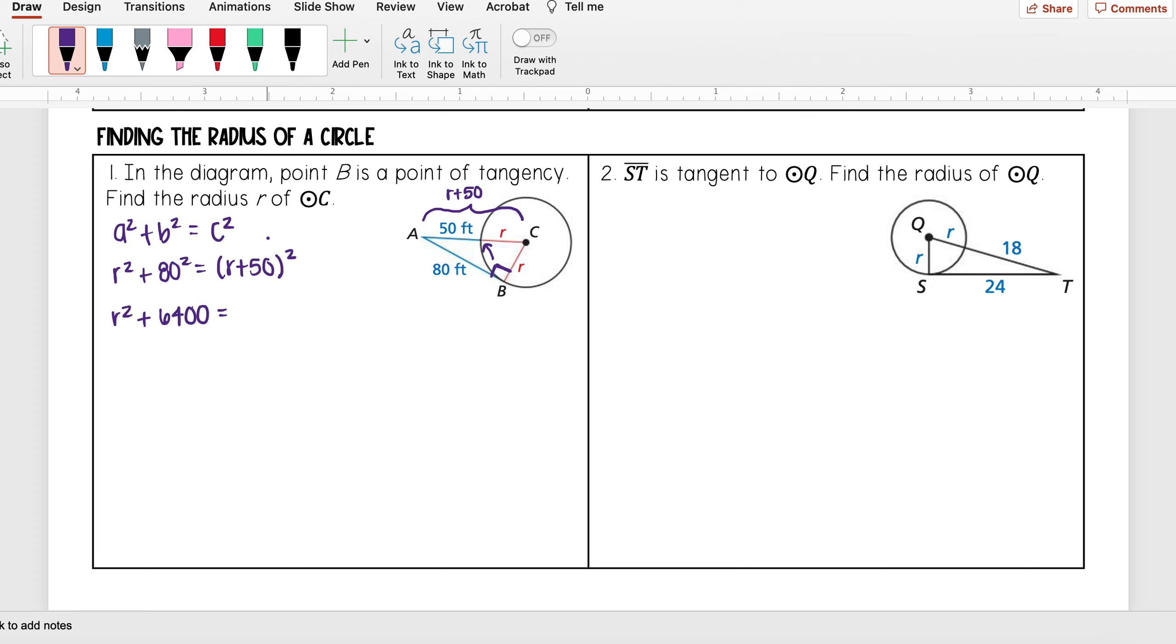Now here, be very careful. Something I see students do a lot is they go ahead and distribute that 2 and say that this is equal to R² + 50². However, it's actually not—you'll be missing a term. Remember, when you're squaring something, that really means you're multiplying it by itself.